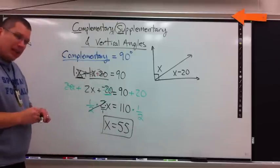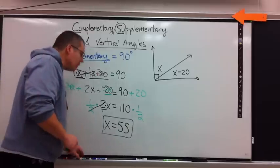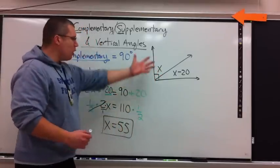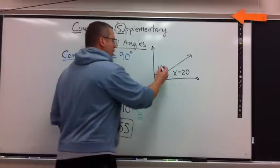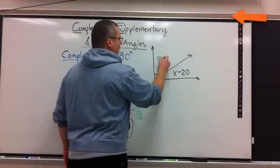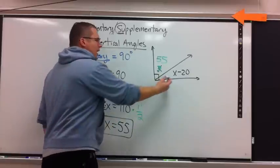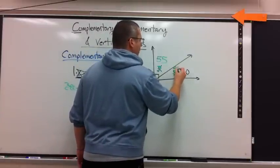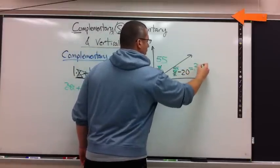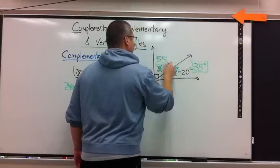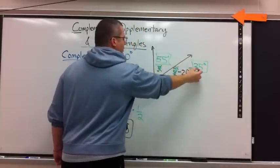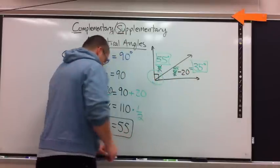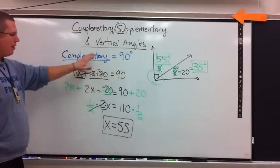I solved for X. Now, you have to be careful here. It depends on what the question wants. If it says solve for X, you're done. If it says what are the angle measurements, then you're not done. You have to go back into your picture. If X is 55, that means this X is 55. This angle was X minus 20. If X is 55, put in 55 for X. What is 55 minus 20? 35. How could you check? 55 plus 35 had better equal to what? It better equal 90. Complementary adds up to 90. Complementary adds up to 90.